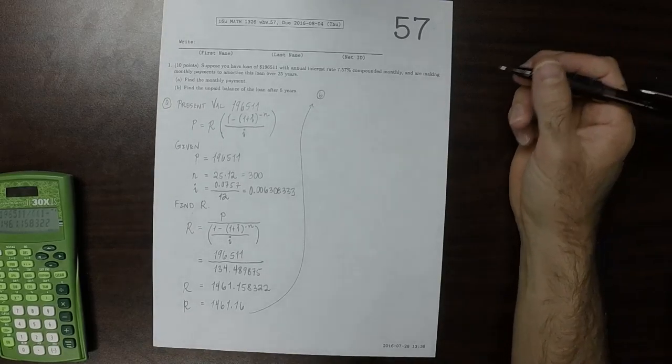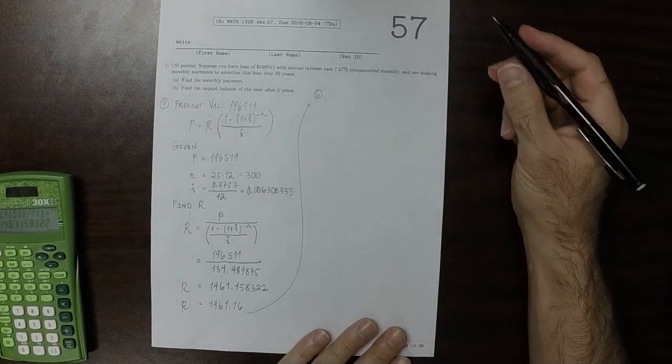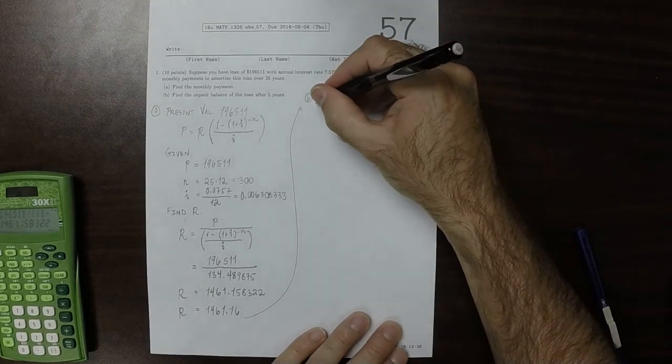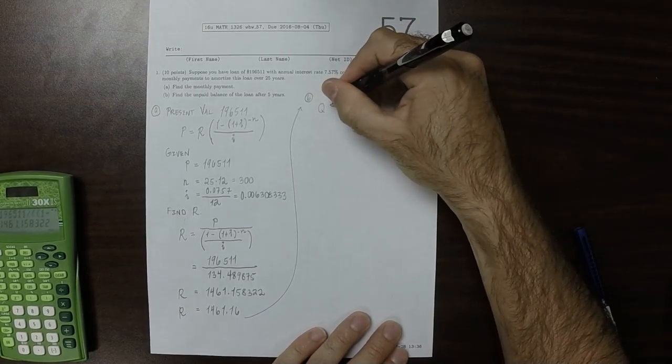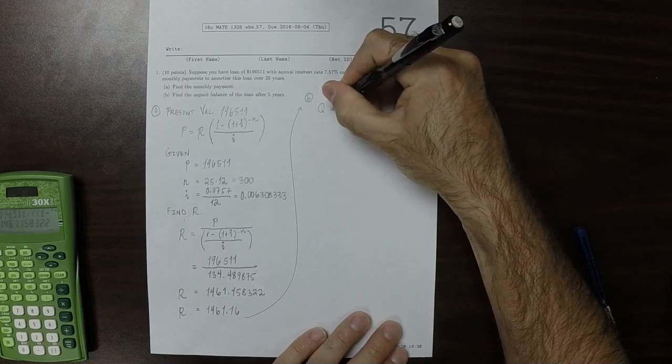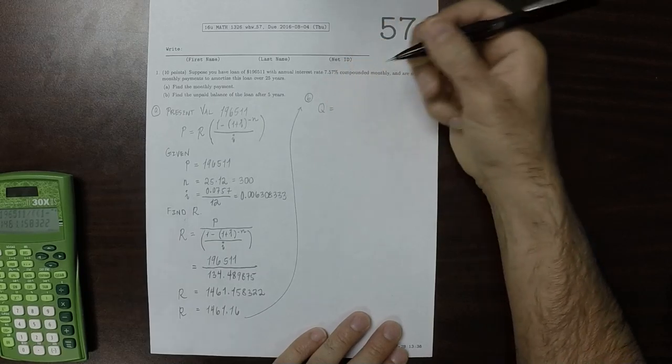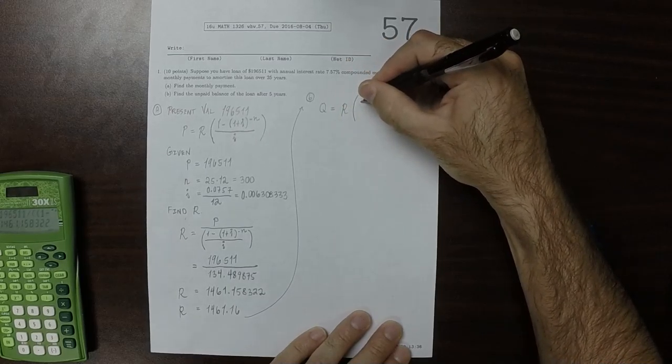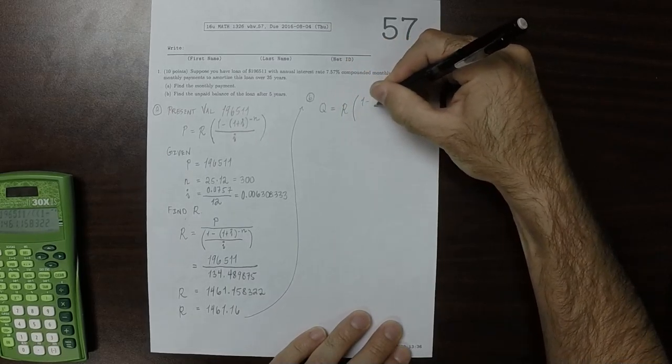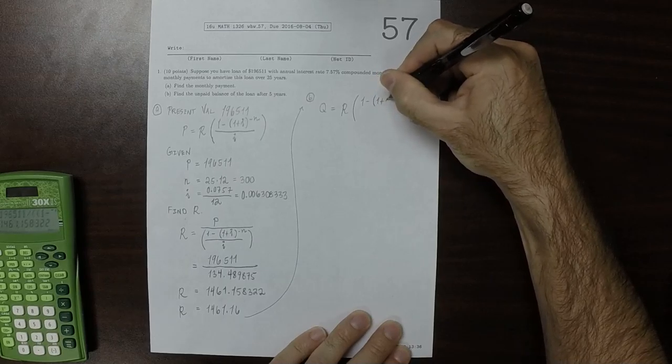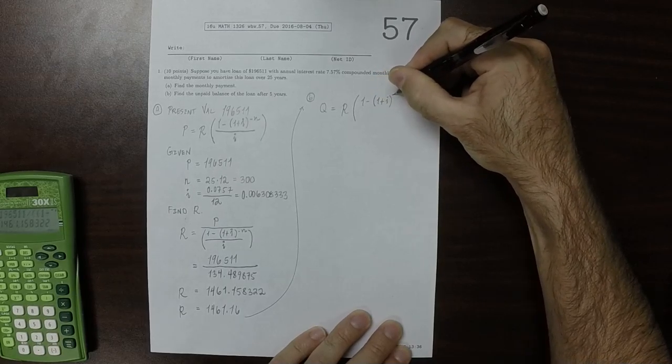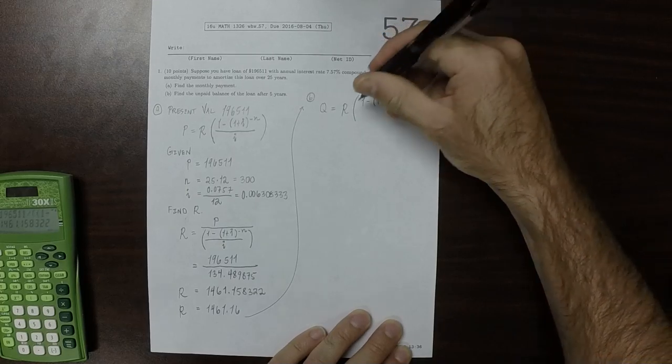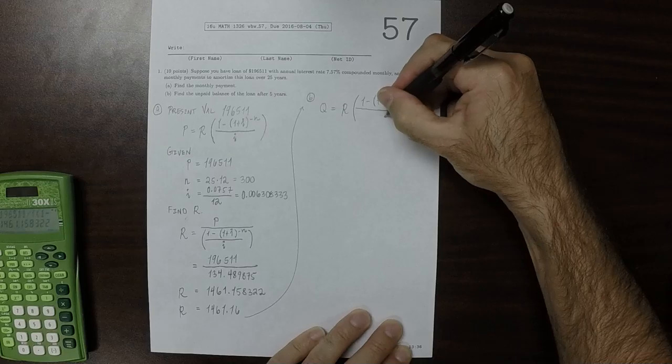Part B: Find the unpaid balance after five years. Well, this is a formula that we went over in lecture. The unpaid balance we denoted by Q. So that is R multiplied by 1 minus 1 plus i with exponent negative n minus x, and then divide by i.